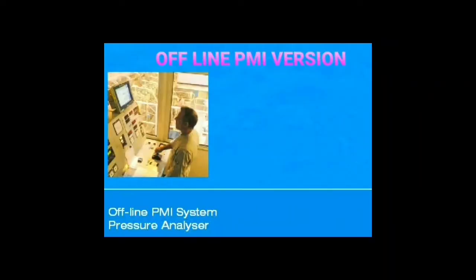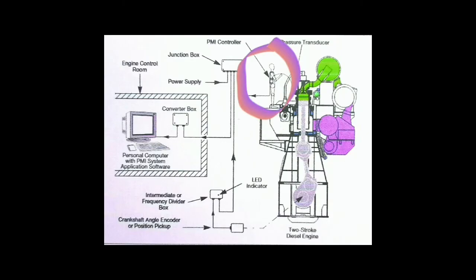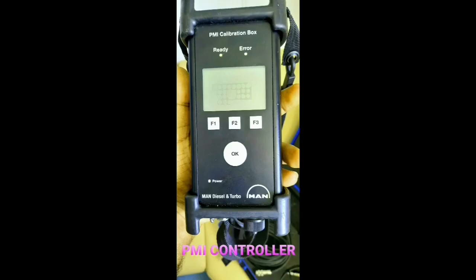The second one is the offline PMI version. In this system there is a high-performance piezoelectric transducer which needs to be mounted manually on the cylinder head indicator cocks from which the cylinder pressure is measured. The transducer has to be manually moved from one cylinder to another between each set of measurements.